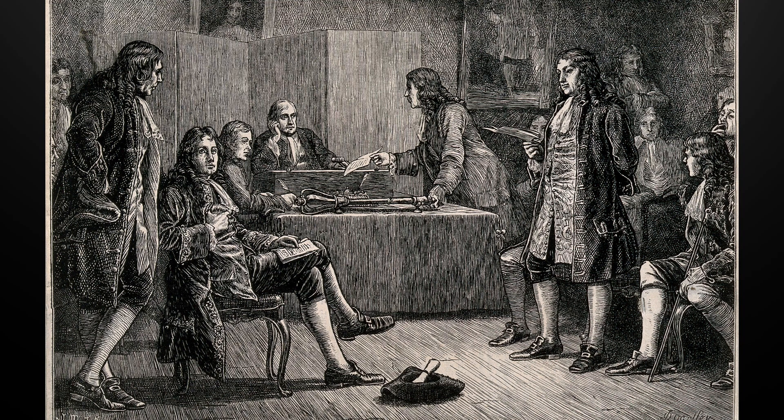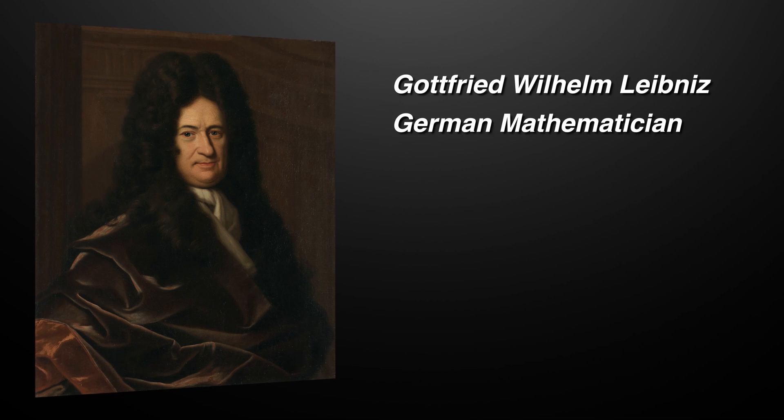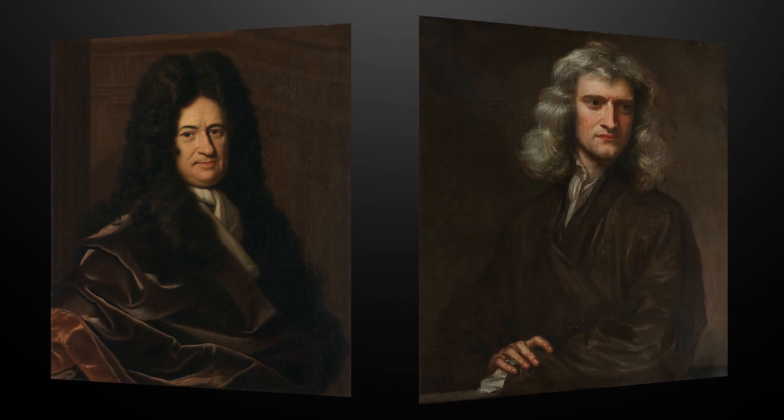Leibniz's take on calculus was a different but roughly equivalent method to Newton's, and it came out a bit later than Newton's fluxions. Newton claimed that Leibniz actually stole his ideas — this is a huge topic that deserves its own video — but it came down to Newton forming a committee of the Royal Society to declare Newton the rightful inventor of calculus, or analysis, or fluxions, or whatever. And he was also the president of the Royal Society at the time, so I'm sure this was all perfectly fair and above board. England closed itself off from the rest of Europe scientifically until roughly the early 1900s, where we start seeing English mathematics again flourish with Hardy and Littlewood.